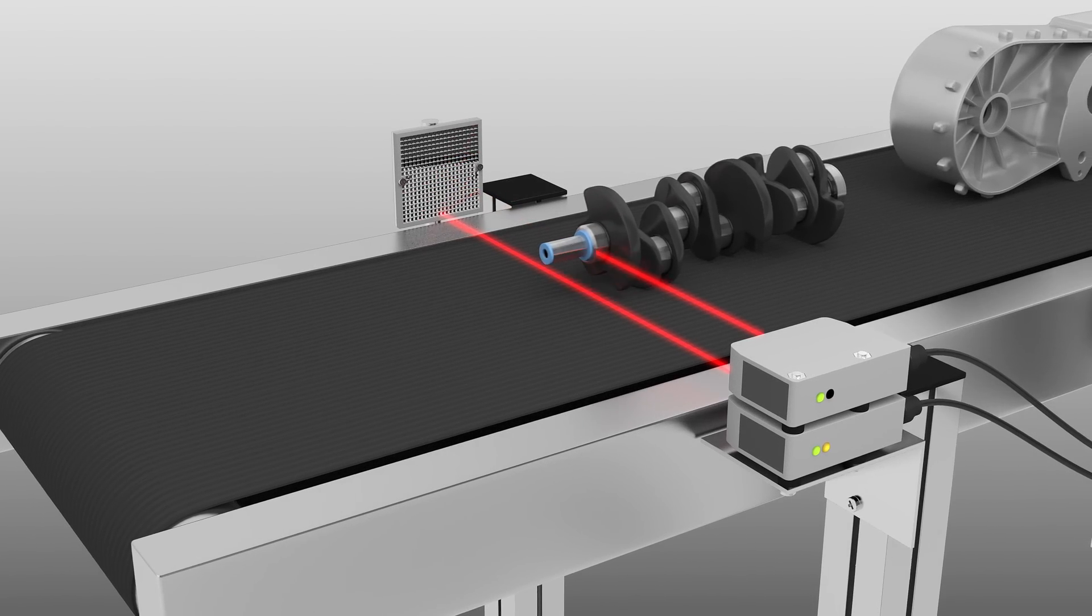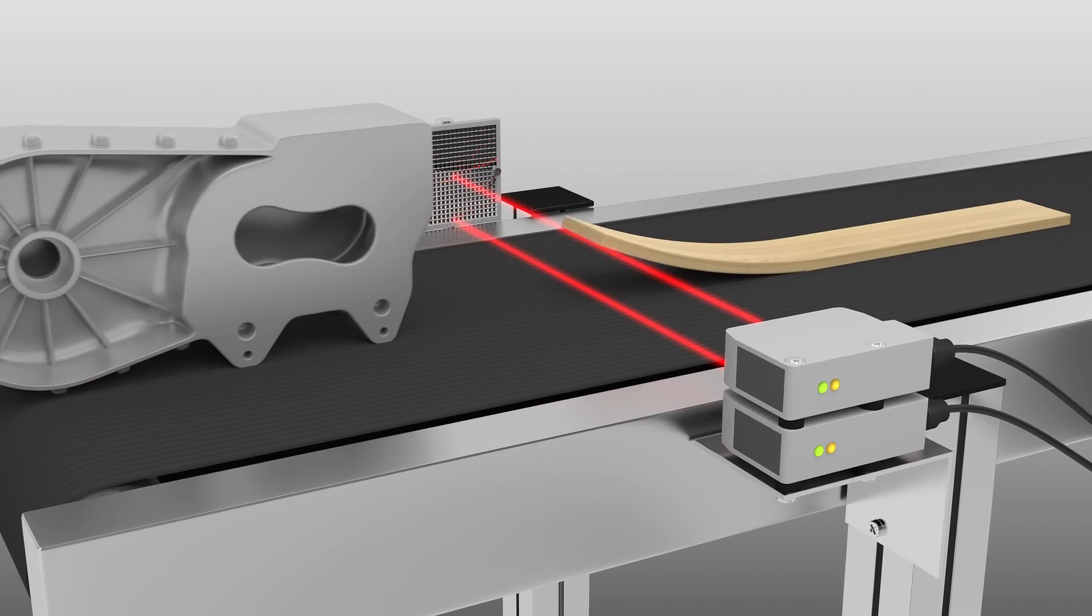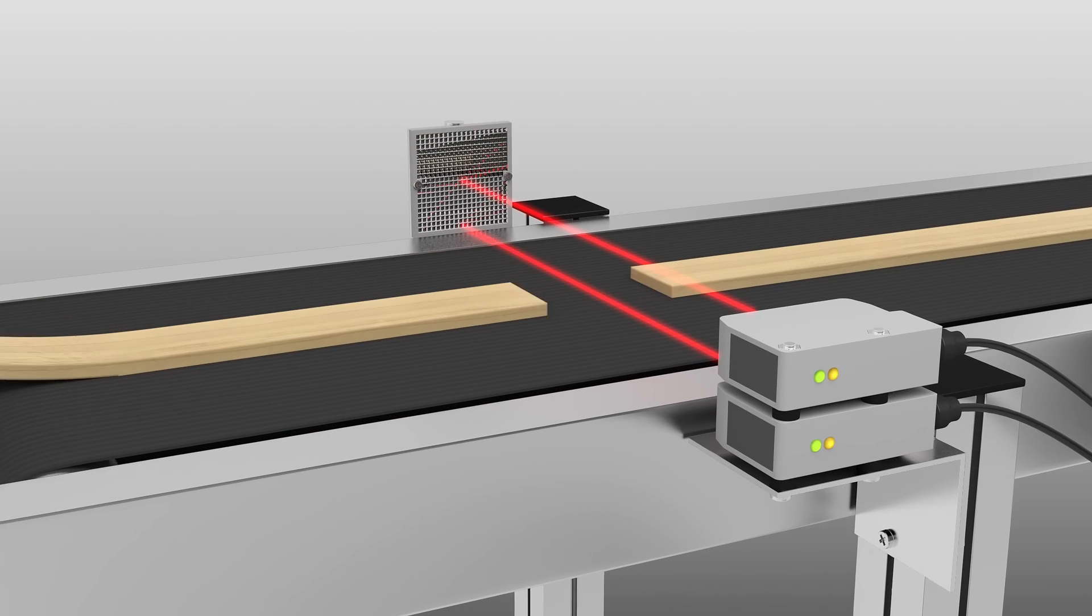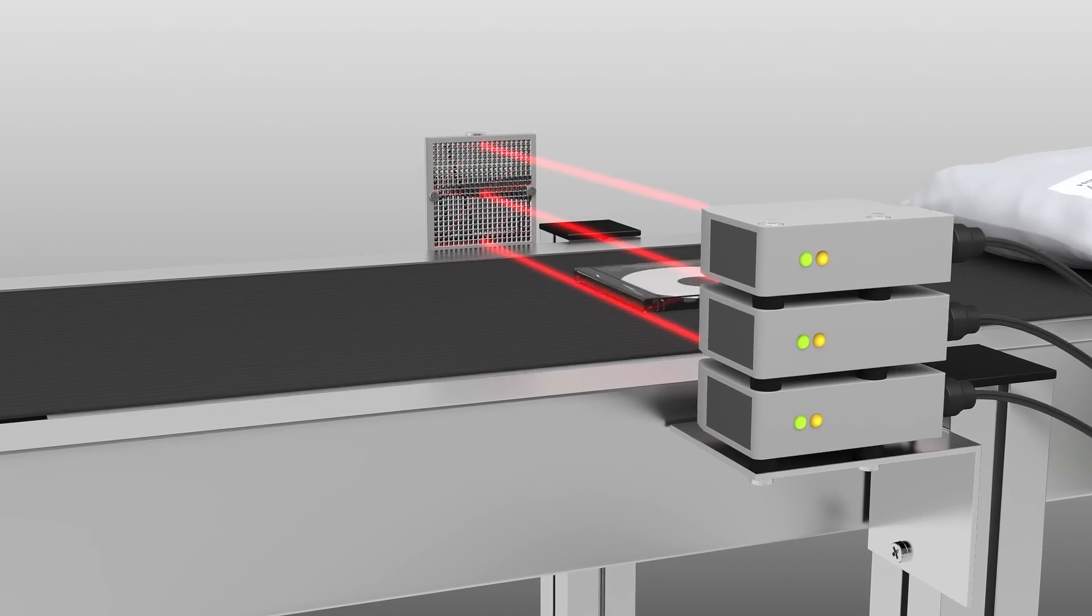Two photoelectric sensors are stacked on top of one another in order to reliably detect the leading edge of objects of varying heights. When attempting to detect flat or irregular objects on a conveyor, the situation looks even worse.